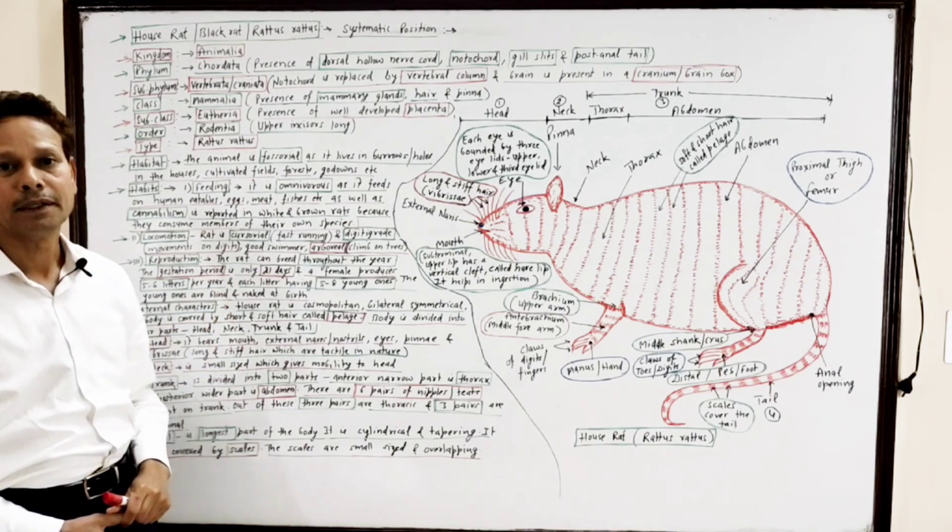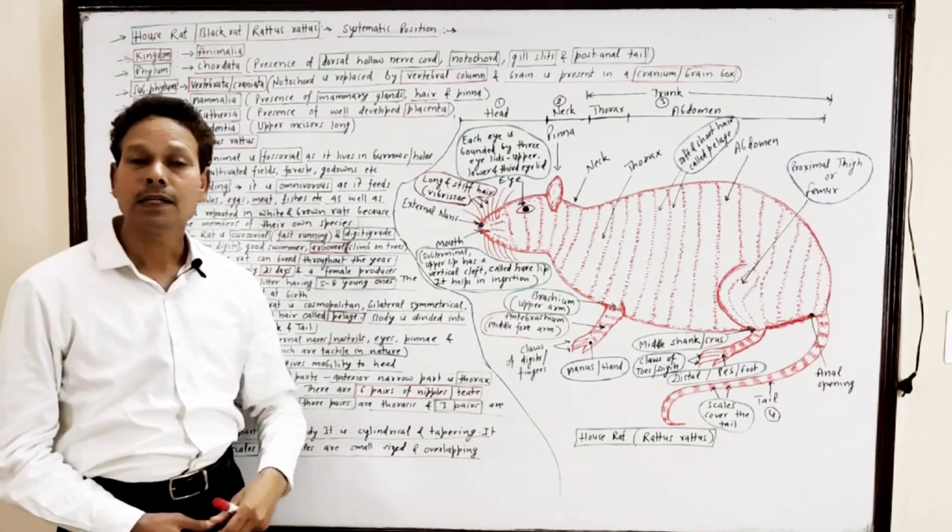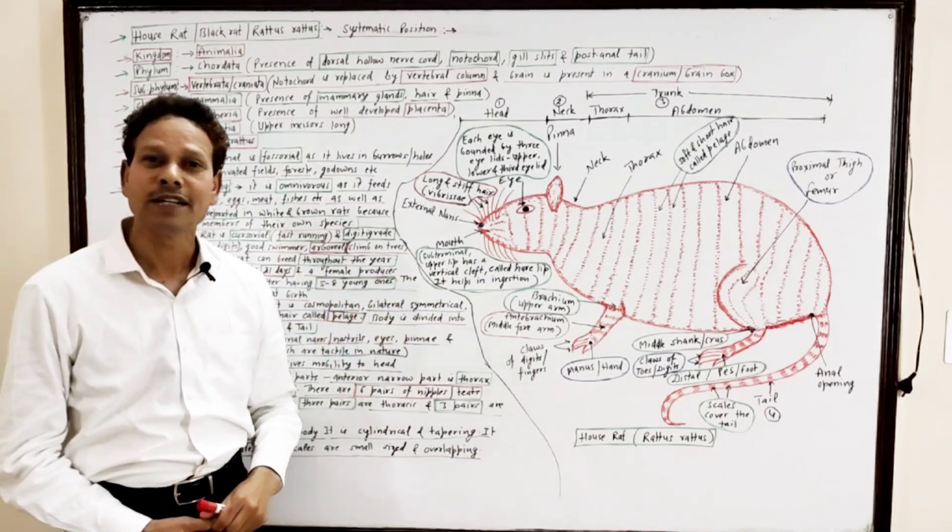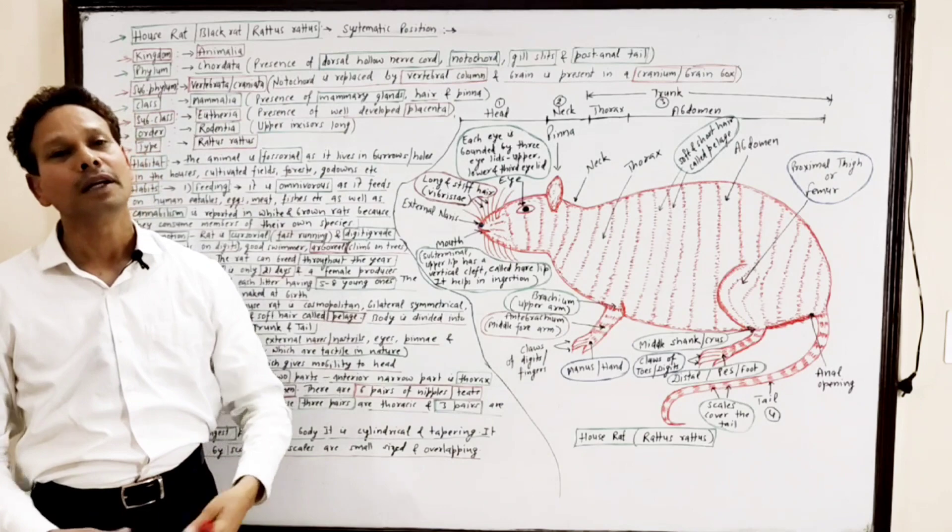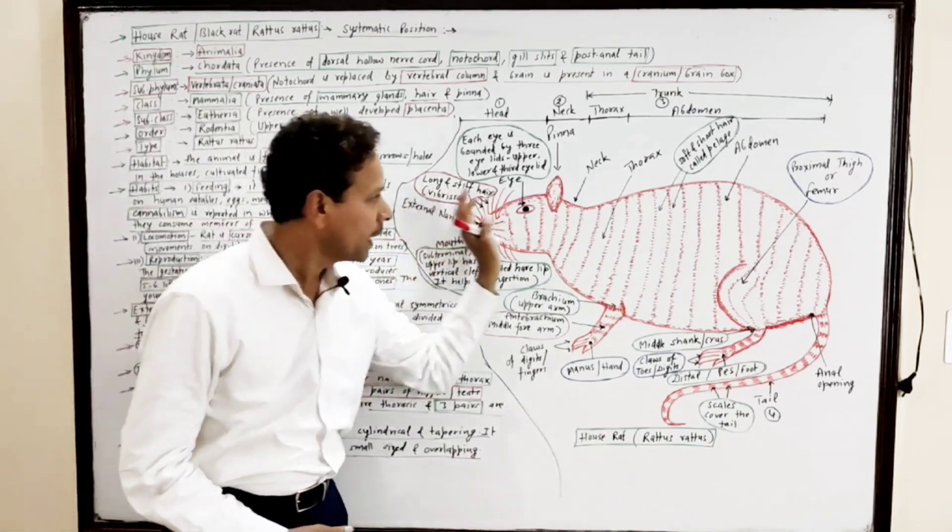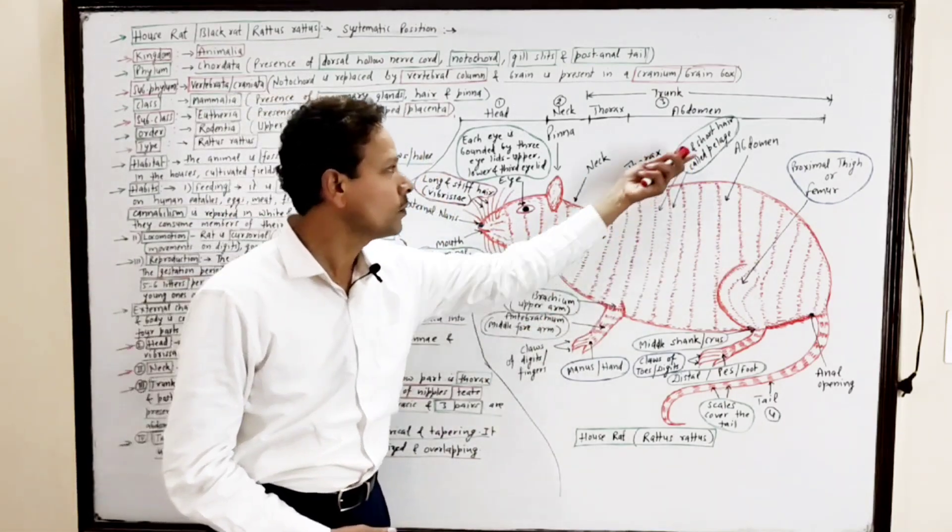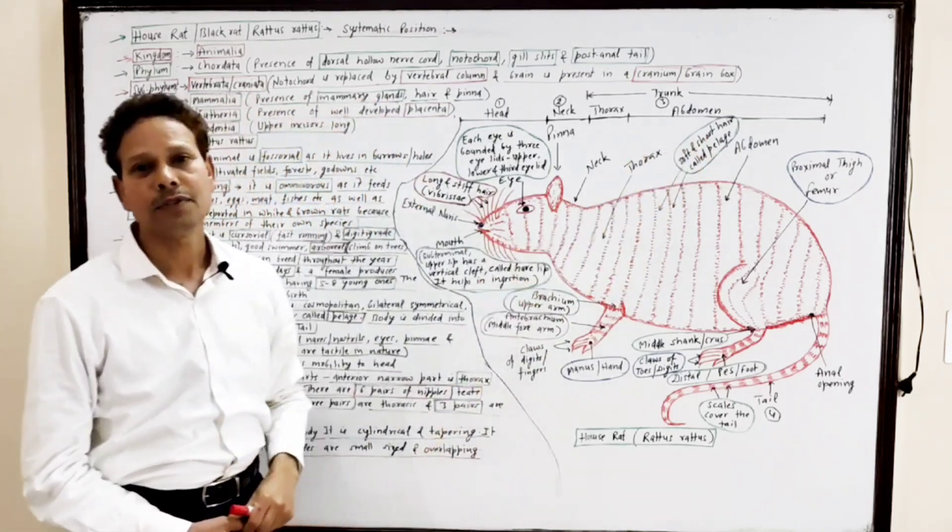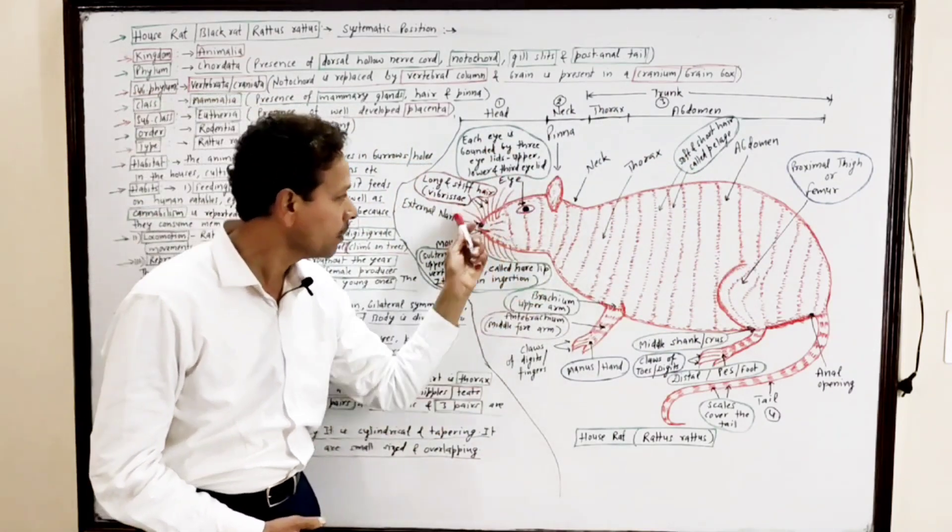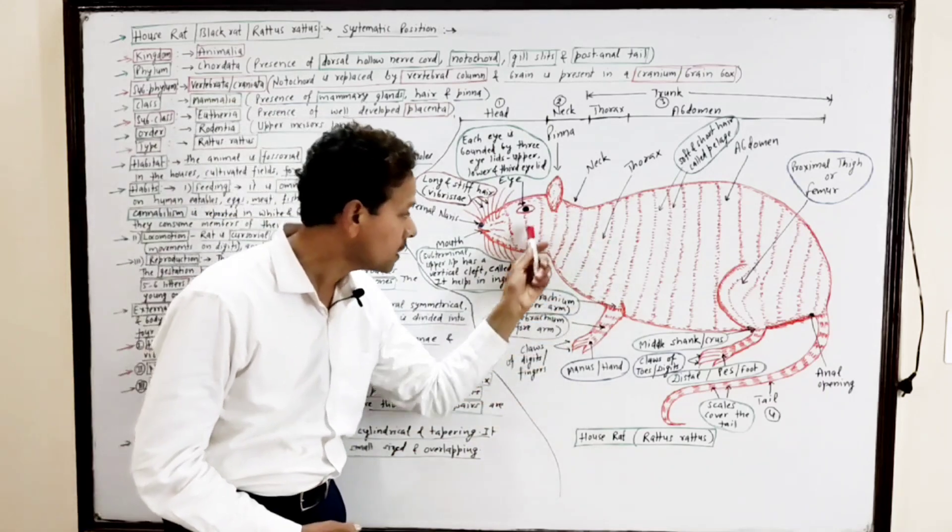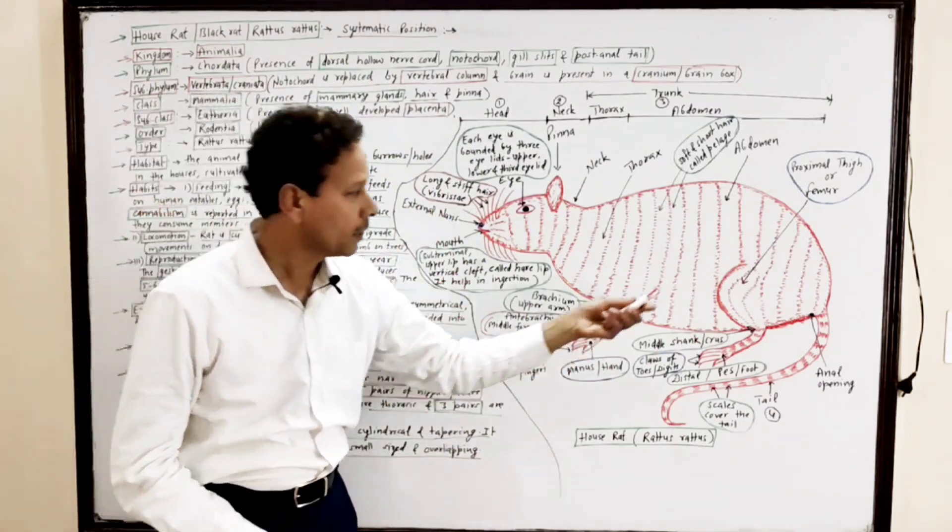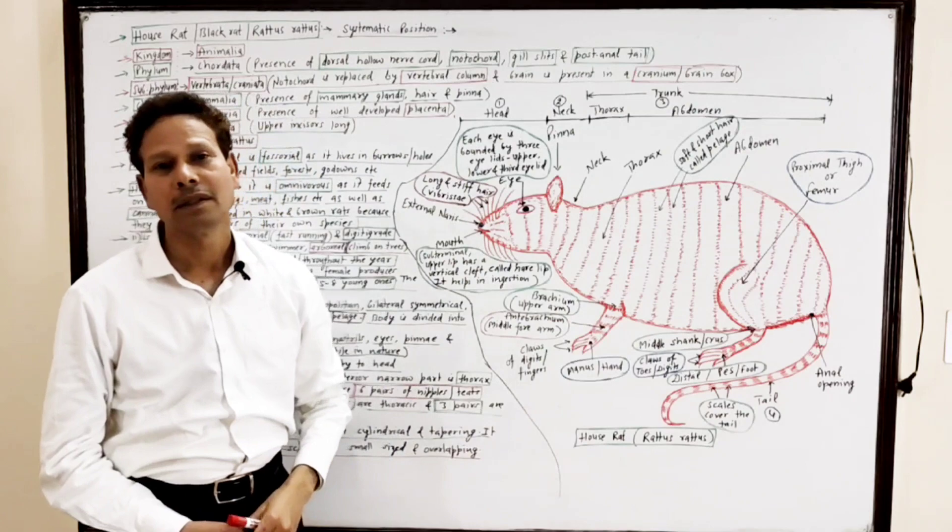External morphology: The house rat is cosmopolitan, meaning it is found everywhere. The symmetry is bilateral symmetry. The entire body of rat is covered with soft and short hair, the pelage. The body is divided into four parts: the anterior-most part is head, then the small part is neck, the maximum part of body is trunk, and the last longest cylindrical part is tail.